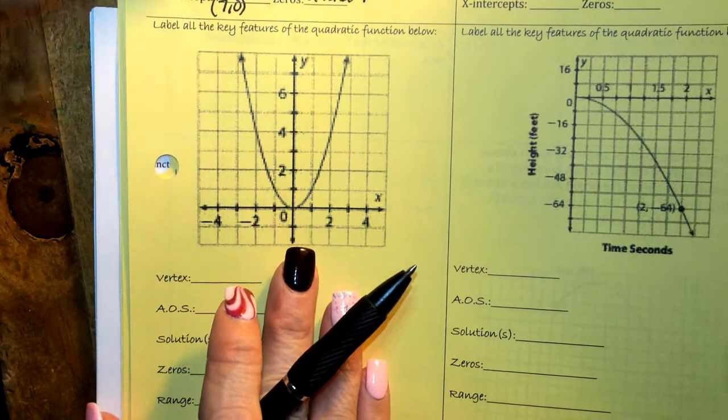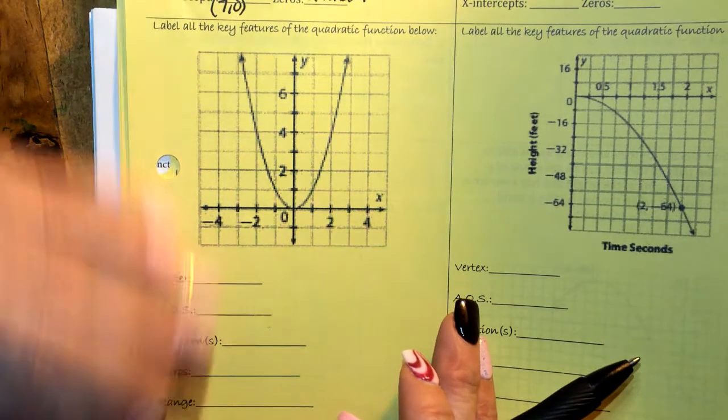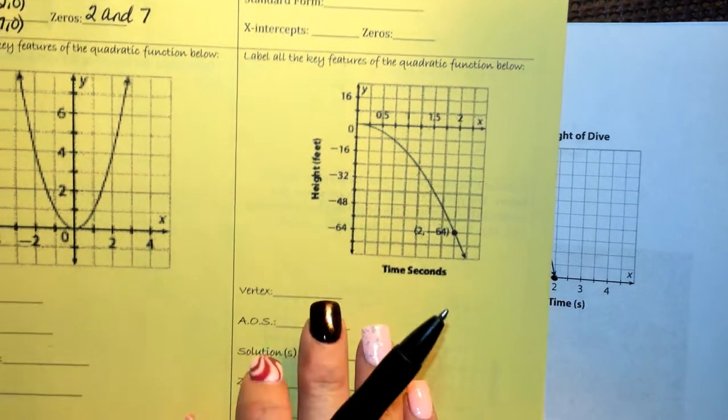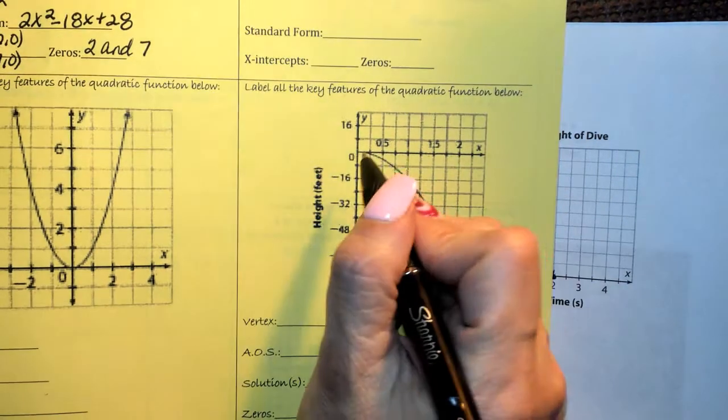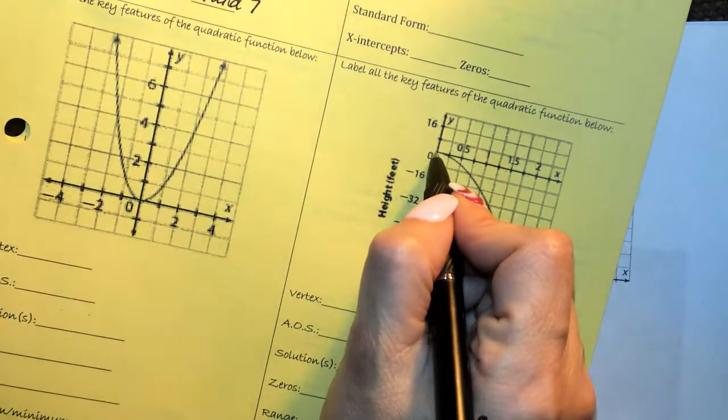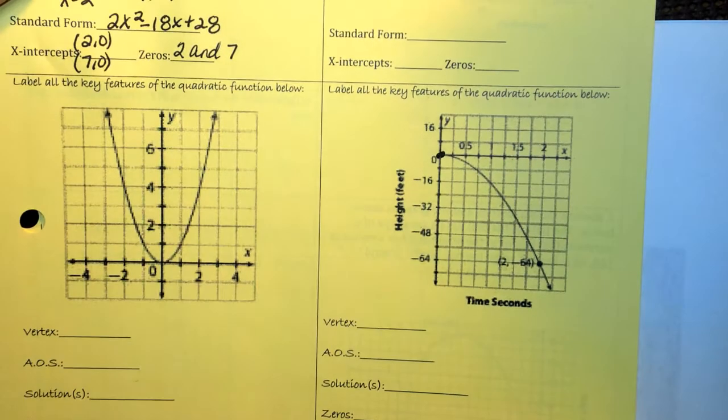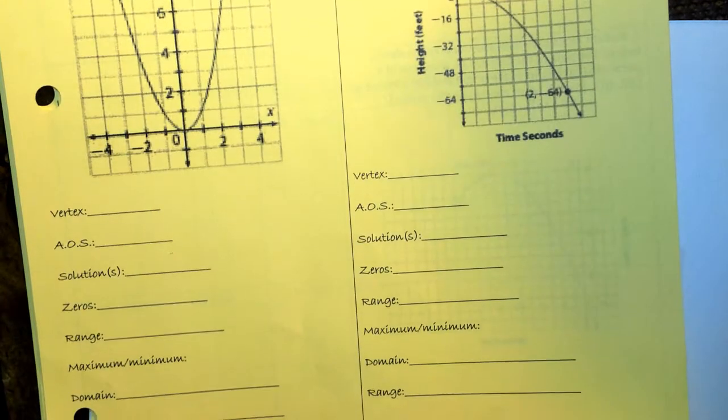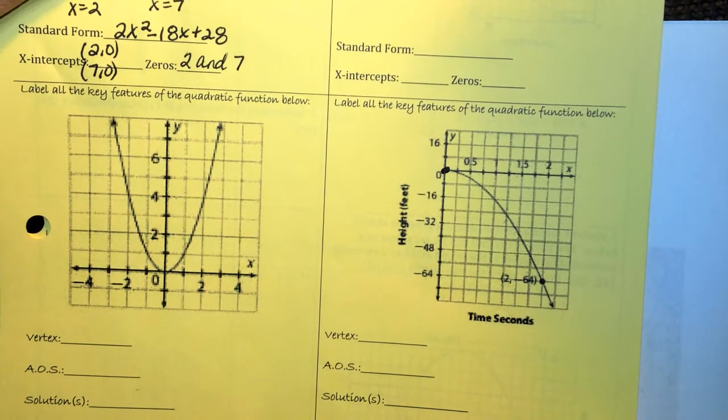Looking at the graph, can you label everything? I feel like you can do that as well. Label all the key features. Vertex, you can see that this one has a vertex, right? Let's see. I believe our vertex, we're going to call that spot right there, 0, 0 as our vertex. Axis of symmetry, solution, range, domain. Yep, you should be able to do all that.